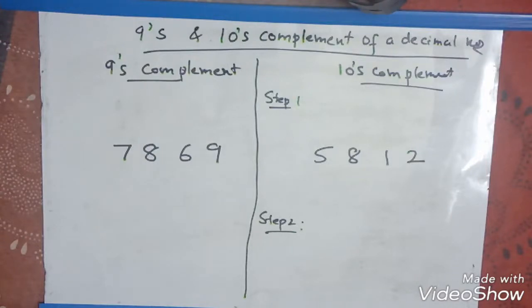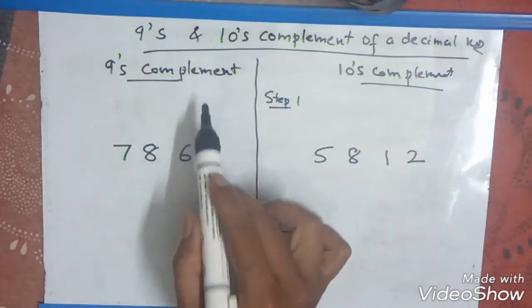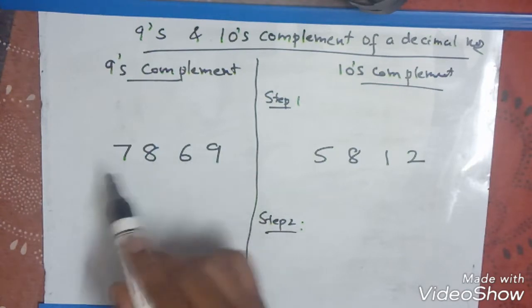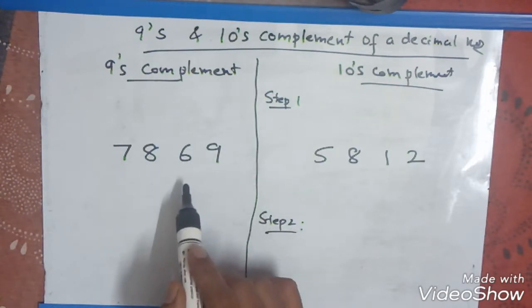In this class we are going to see the 9th and 10th complement of a decimal number. The first one is the 9th complement. We will take one example, 7869. Let us find out the 9th complement of this number.